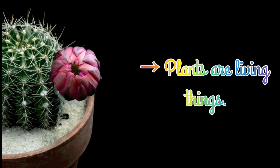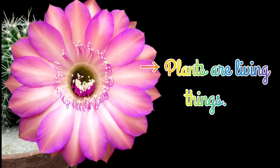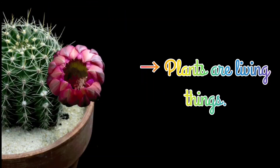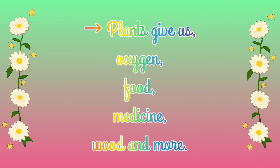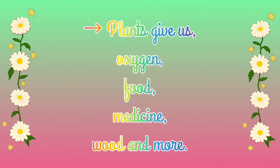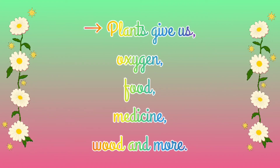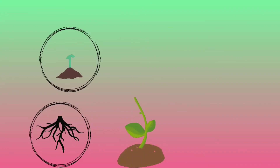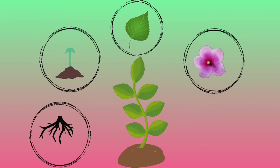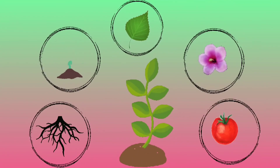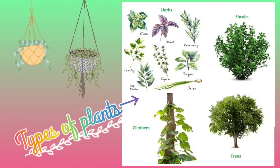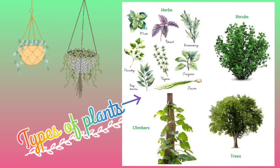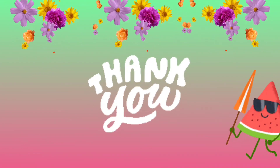Today we have learned that plants are living things. They give us oxygen, food, medicine, wood, and so on. Plants have different parts that perform different functions that help them to grow. In our next lesson, we will learn about different types of plants. Thank you and see you next time.